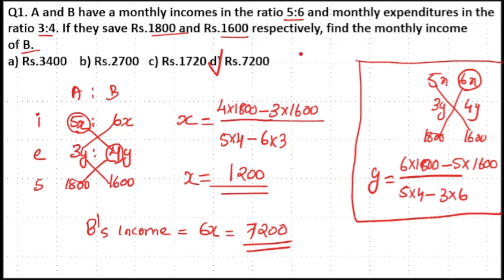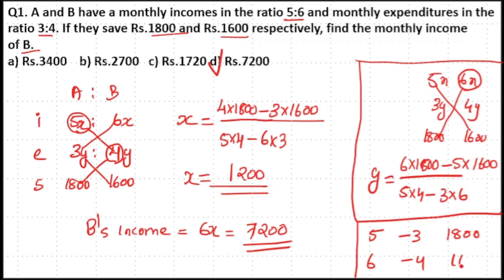This method is common to all income, expenditure, and savings questions. Now if you want to find this using the linear equation method, take the two columns as linear equations — income minus expenditure equals savings — that is, 5x minus 3y equals 1800 and 6x minus 4y equals 1600. You can use the Vedic math method to solve these linear equations. I have already done a video about the Vedic math trick for solving linear equations — check the link in the description. So here your answer is option D.